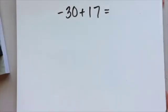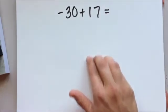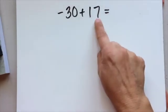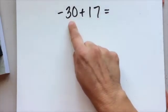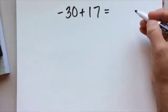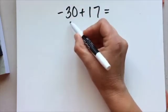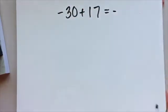All right, again, too big to use the tiles for. Instead, I'm going to imagine 30 red tiles here and 17 yellow tiles. I'm going to take 17 red tiles away to cancel out these 17 yellow tiles. But I'm going to have more red tiles left because I started with more of them. So that means my answer is going to be negative.